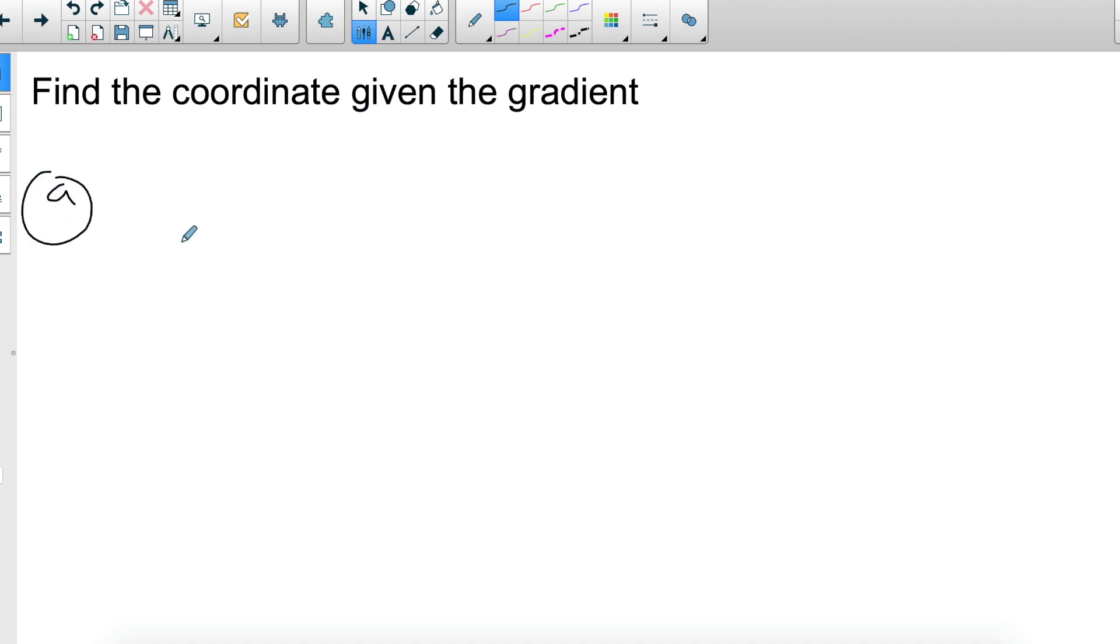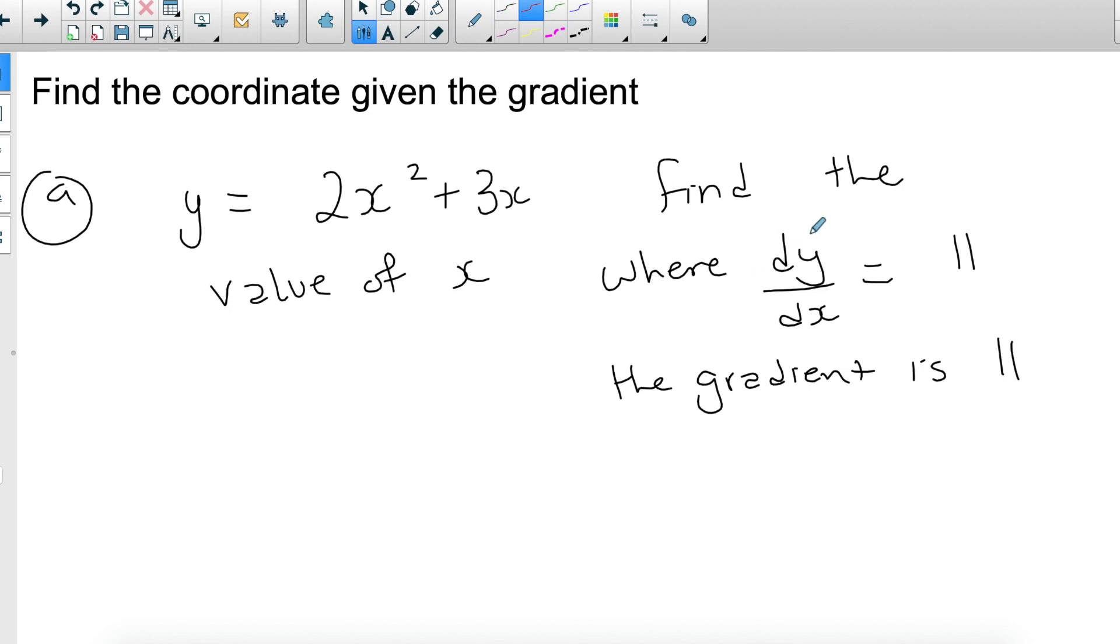So let's start with an example. If I have an equation, say y equals 2x² plus 3x, and I tell you find the value of x where dy/dx equals 11. Now they could say where dy/dx equals 11, they could say where the gradient is 11. So they could use either this or this. You just need to be comfortable. Remember that dy/dx, gradient, derivative, differentiation—they all mean the same thing.